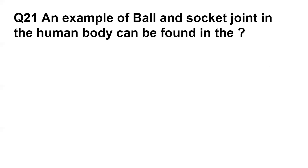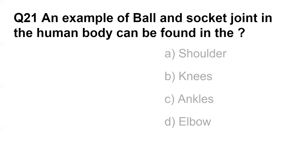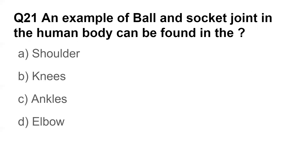Question number twenty-one: An example of a ball and socket joint in the human body can be found in — options are shoulder, knees, ankles, and elbow. The answer is shoulder.